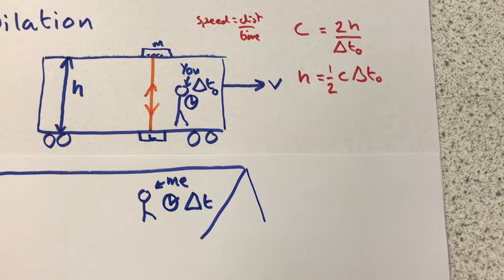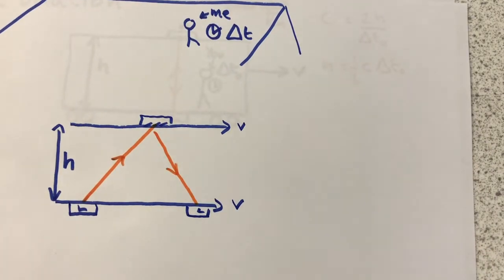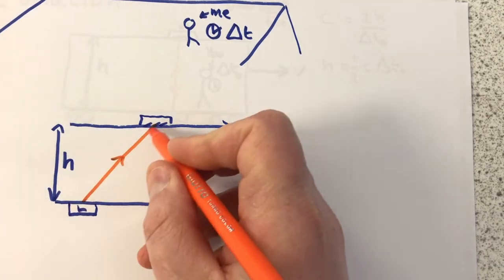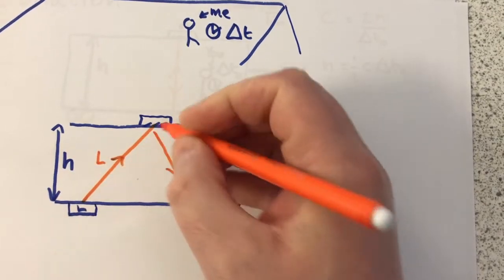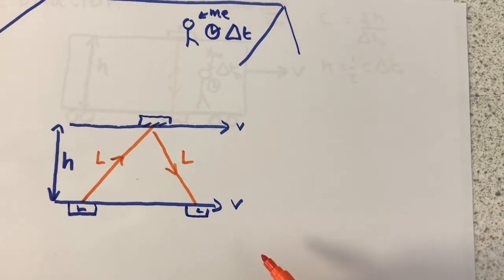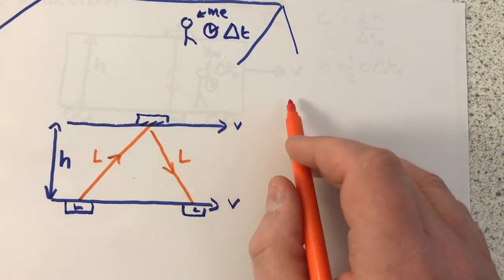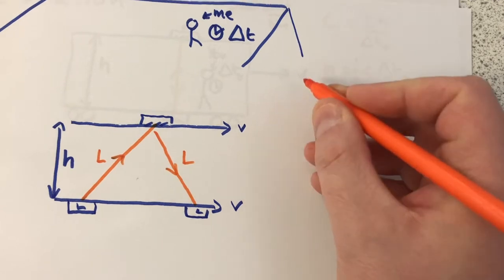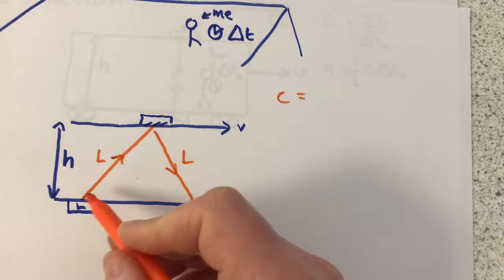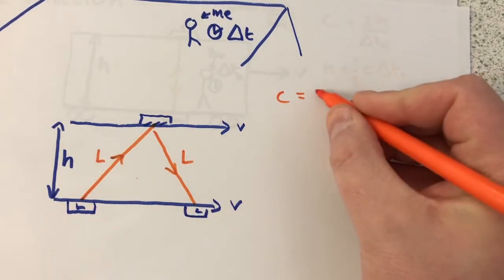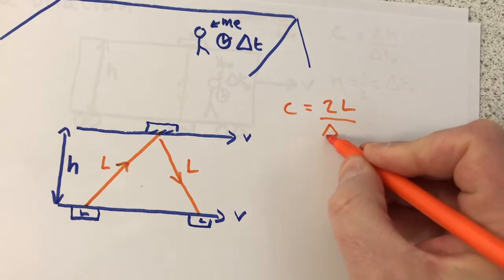Now let's go back to my story. I'm seeing a completely different distance — not straight up, straight down. I'll call it L, so the beam travels L up and L down. As far as I'm concerned: C = 2L / delta T, where delta T is not proper time. I would like to get rid of L and substitute something with H instead.